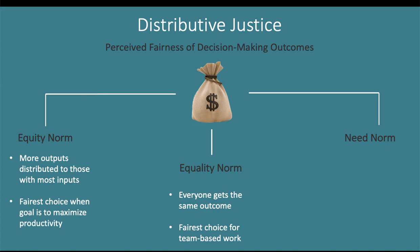The last norm for distributive justice is the need norm, which says outcomes are distributed based on individuals' needs, meaning some individuals will get more than others depending on who needs more. For instance, there is talk about distributing stimulus checks to families in the United States who are in need — up to $1,400 — but not everybody gets the full amount. Those with the greatest financial need get the most money; individuals without financial need get less or nothing. The outcomes are dependent upon who needs more resources at that time.